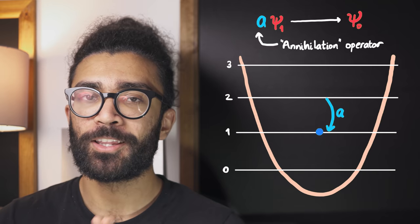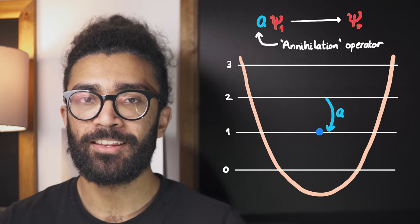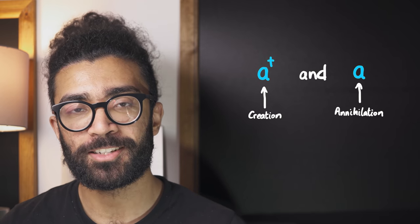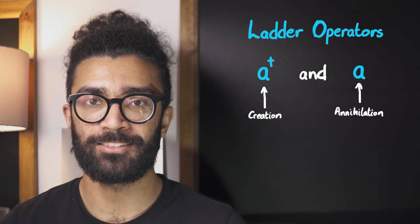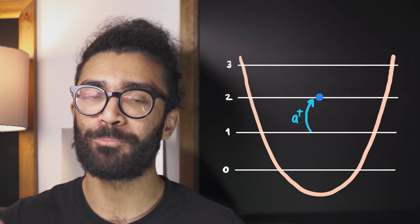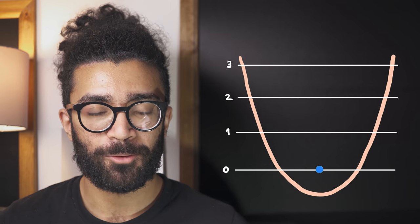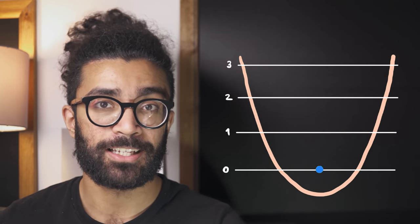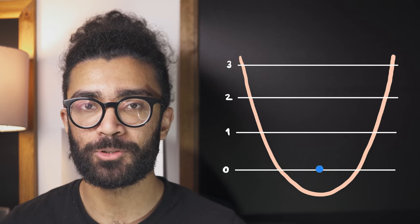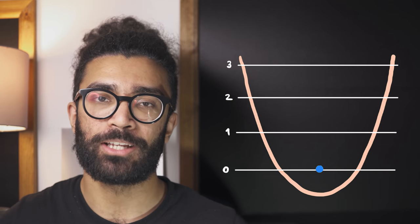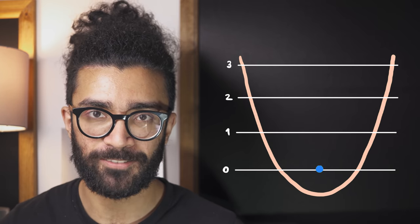The annihilation operator takes energy away from the system so that our electron drops from one energy level to the one just below it. Therefore, this operator is known as the annihilation operator. Together, the creation and annihilation operators are known as the ladder operators, because you're essentially climbing the rungs of a ladder — up or down — depending on which operator you use. It's worth noting that when I say an electron is moving up or down energy levels, it's not physically going up or down anywhere; it's actually just gaining or losing energy.